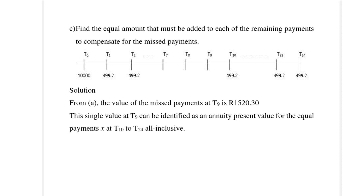For part C, we find the equal amounts that must be added to each of the remaining payments to compensate for the missed payments — in other words, we add a certain amount X to each remaining payment. From part A, we already have the value of the missed payments at T9, which is 1,520.30. We're going to consider this 1,520.30 as the present value of a loan and find the payment amount.